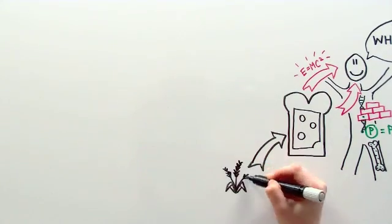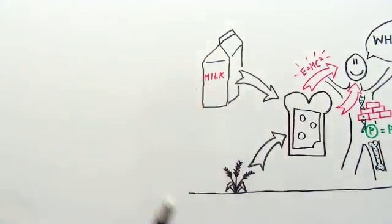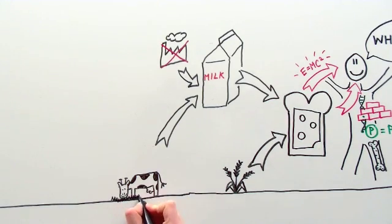A sandwich is made of wheat, which grows on the land. Cheese is made from milk. Milk comes from a cow, who can produce milk by eating grass. And grass also grows on the land.